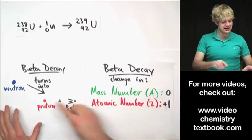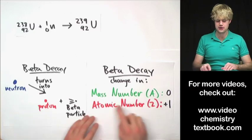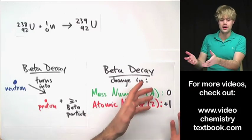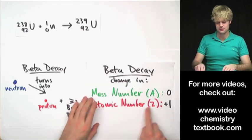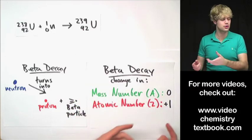So what it wants to do to become happy is to do beta decay. You may remember that in beta decay, a neutron turns into a proton and then it kicks out a beta particle. This changes the mass number not at all because the neutron turns into a proton. But since we have one more proton, the atomic number goes up by one.